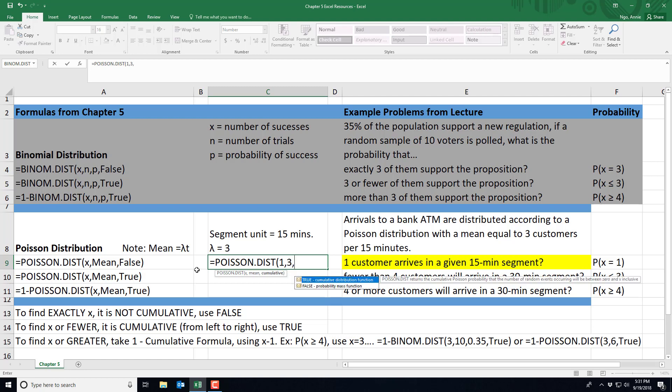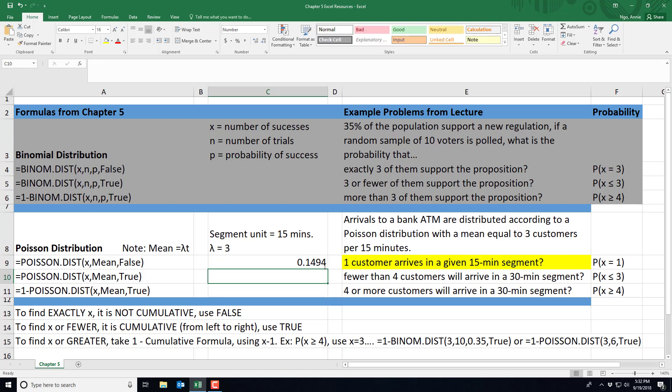Put in a comma and we'll type in false because we are looking for the exact value. And down here below I put a little rule of thumb reminder of when to use cumulative or not cumulative and how. So we'll go ahead and hit enter. The probability that exactly one customer comes in a given 15 minute segment is 0.1494.